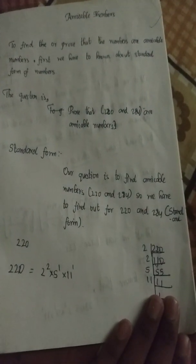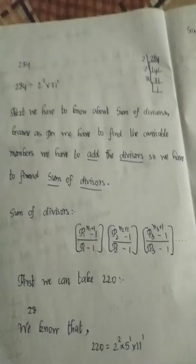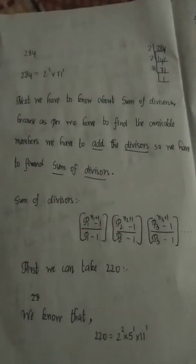To find the standard form for 220 and 284: 220 can be written in standard form as 2 power 2 into 5 power 1 into 11 power 1. And 284 can be written in standard form as 2 power 2 into 71 power 1.